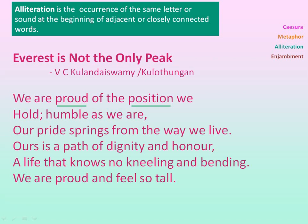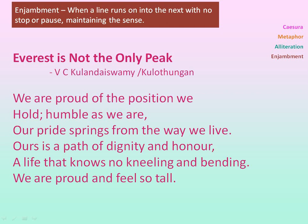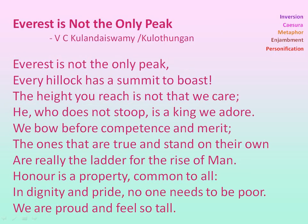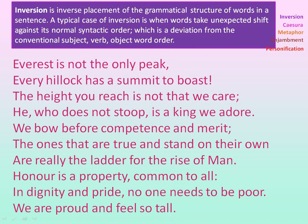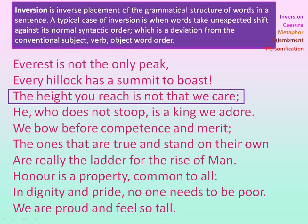Alliteration in the first line: 'proud' and 'position' both begin with the letter P. In the third line, 'way' and 'we' both begin with W. In the fifth line, 'nose' and 'kneeling' both begin with the sound N. Enjambment is also used — in the first line 'we are proud of the position,' there is no punctuation and it continues into the next line 'we hold,' hence enjambment.